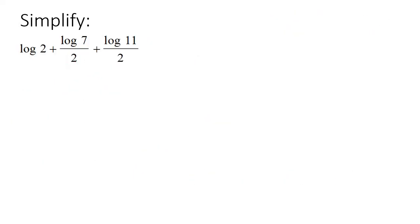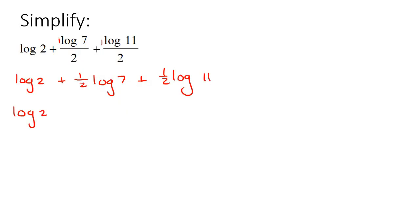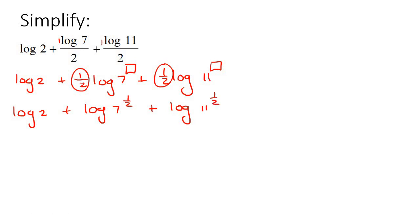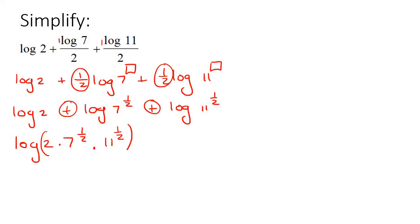For this example, you should think of this (1/2) as 1/2 and 1/2. So we can write log(2) plus (1/2)·log(7) plus (1/2)·log(11). Then the halves need to go back as exponents: log(2) plus log(7^(1/2)) plus log(11^(1/2)). If there's no base number shown, it's automatically assumed to be 10.